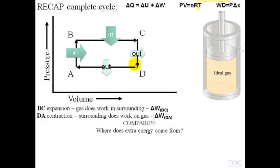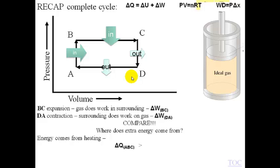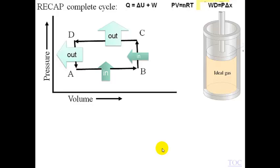The work done between B and C is greater than the work done between D and A because the pressure is greater. This extra energy must come from somewhere — to drive this thermodynamic cycle we must put in thermal energy. Some thermal energy comes out, but we must put in more than we get out. The work we do comes from the heating we do, so the thermal energy in section ABC must be greater than the thermal energy ejected in section CDA. This is a heat engine: getting heat to do work.